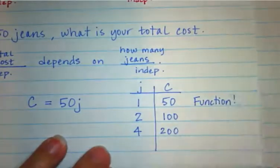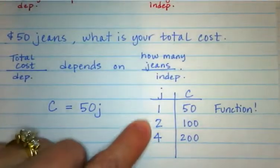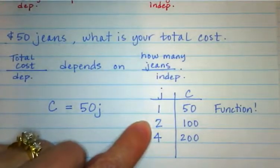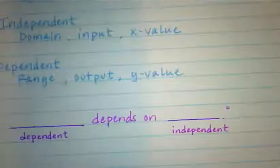Because if each pair of jeans costs $50, then each input is only going to be used once. I think that covers independent and dependent.